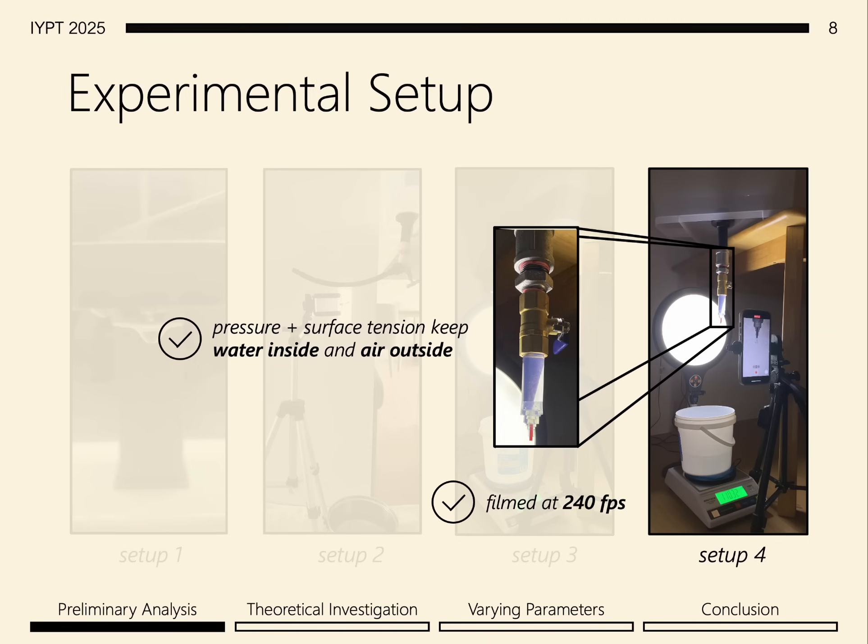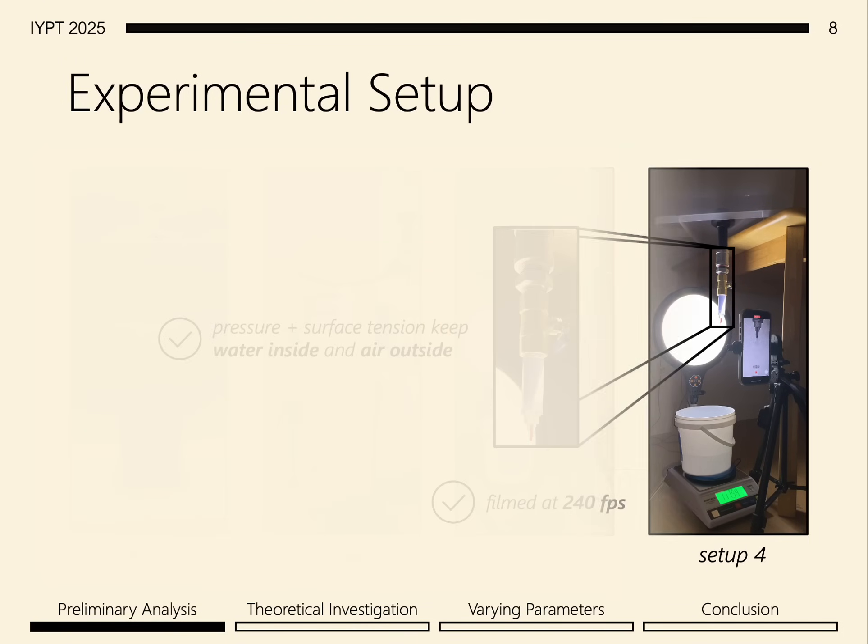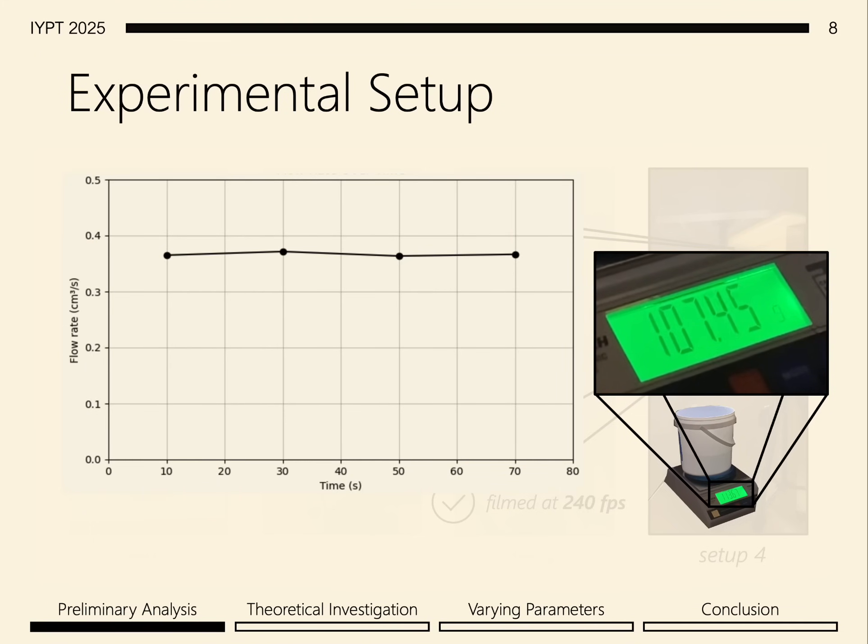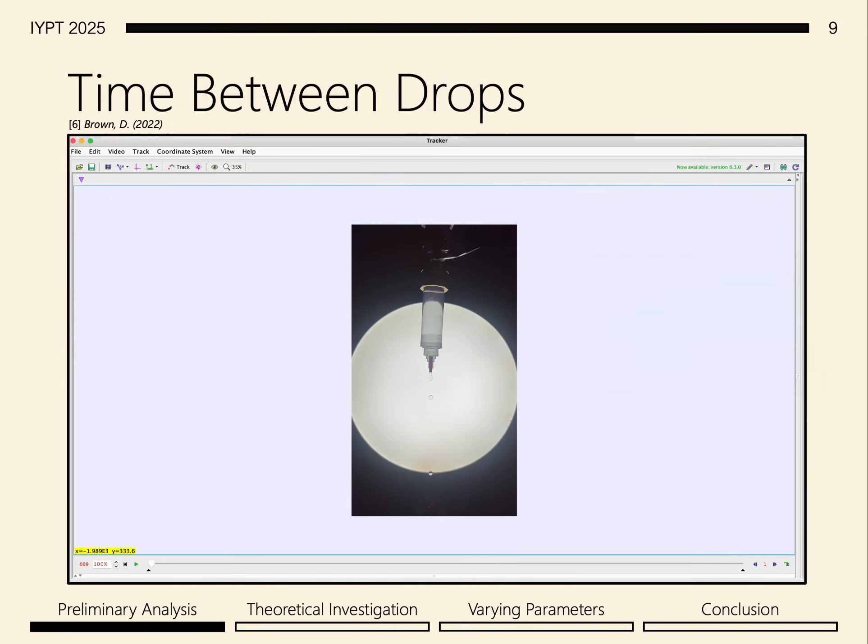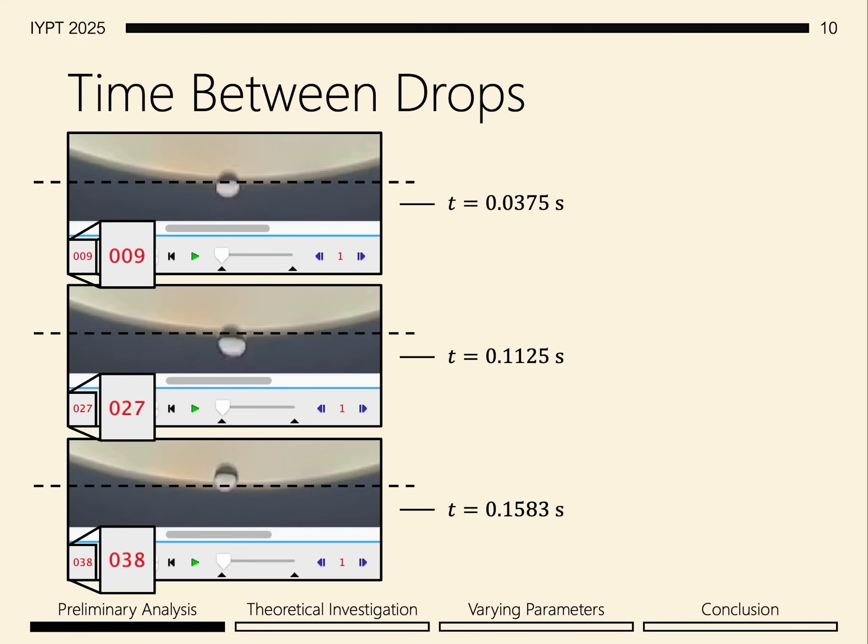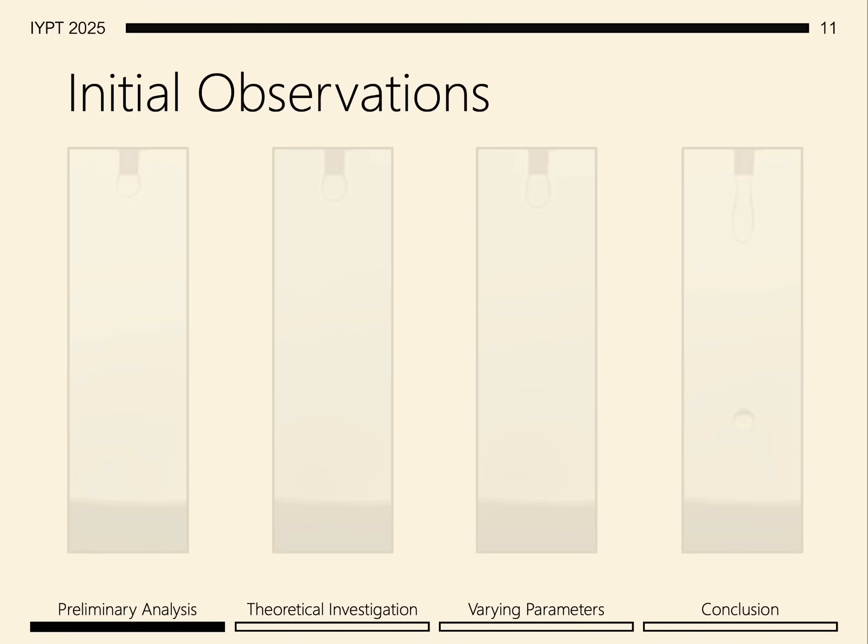I filmed the dripping at 240 frames per second, and I ensured constant flow rate by looking at the average change in mass over 20 second periods, ensuring that the flow rate deviation was less than 3% for all data used. We used Tracker to find the time between drops by finding the frames where each drop just reaches a certain reference point, such as the bottom of the lighting, from which the time between drops can be calculated.